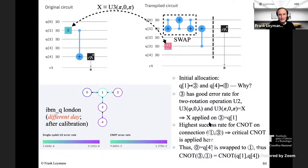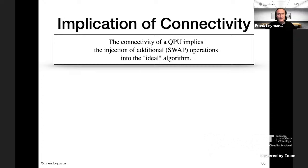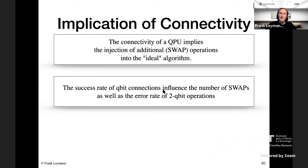The implication of connectivity: the QPU topology requires injecting additional SWAP operations into the ideal algorithm, and each SWAP consists of three CNOTs. The success rate of qubit connections also influences the number of SWAPs and the error rate of two-qubit operations. Considering success rates and one-qubit error rates during qubit allocation improves execution reliability — and the transpilers used in industry actually do exactly what I've shown.